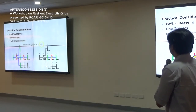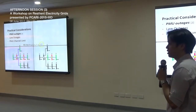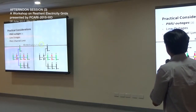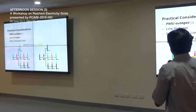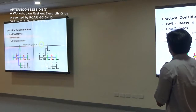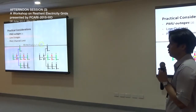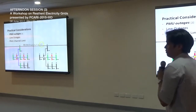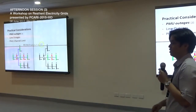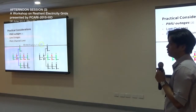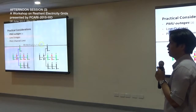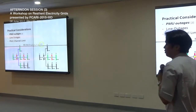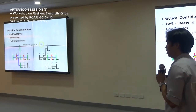The formulation for PMU outages is done by increasing the required observability for each bus. For example, earlier the constraint for bus 3 was at least one. Now we increase it to two, meaning at least two PMUs must observe bus 3. So in case of one PMU outage, bus 3 is still observable. If you need a contingency of two PMU outages, you increase the minimum bus observability to three, meaning at least three PMUs must observe that specific bus.